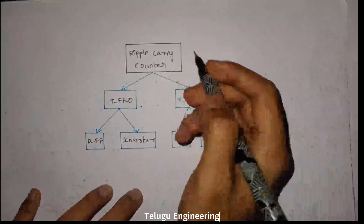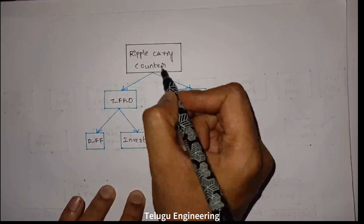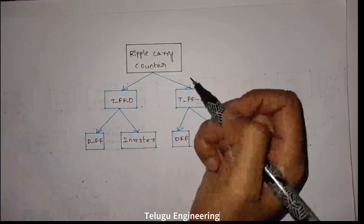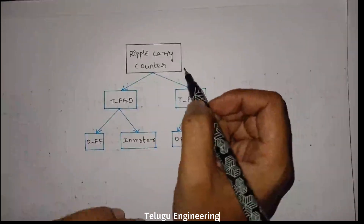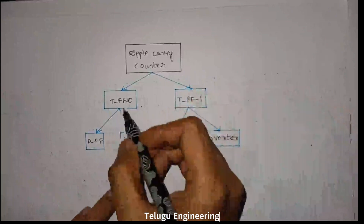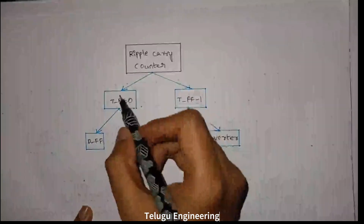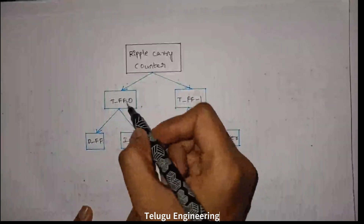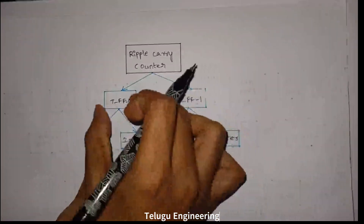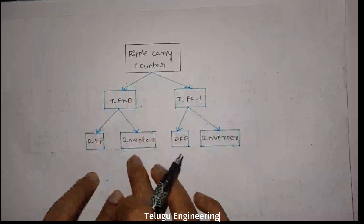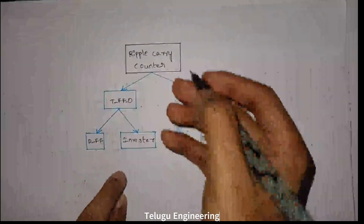First, we will do the ripple carry counter at the top level. If I am having a 2-bit counter, I will use 2 T flip-flops. Then I will break down each T flip-flop into an inverter and D flip-flop. So this is the top-down approach: from top to bottom.